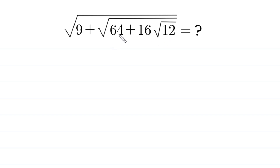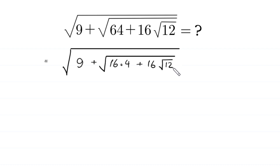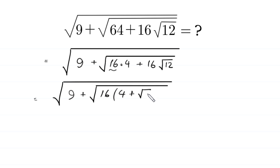This expression can be written as square root of 9 plus square root of — 64 can be written as 16 times 4 — plus 16 times square root of 12. From these two terms we can factor out 16 as a common factor, leaving in brackets 4 plus square root of 12.